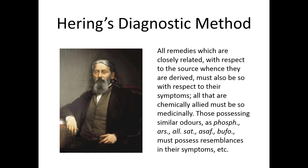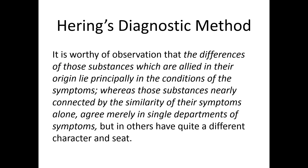Hering, interestingly enough, in his article on the study of Materia Medica, actually says that remedies that come from a similar source must be similar in their medicinal effects — which is a little different from what Hahnemann says. Hahnemann says sometimes they're similar and sometimes not; Hering says if they come from a similar source, then their medicinal effects must be similar, and it's only those remedies from a similar source that will be similar in their most important qualities.